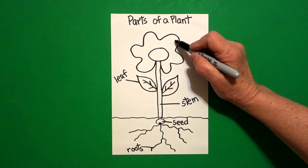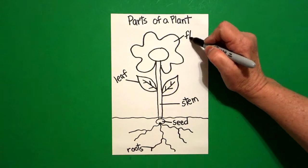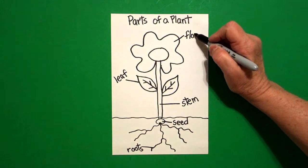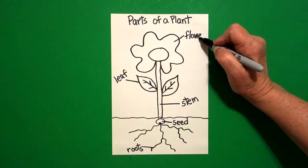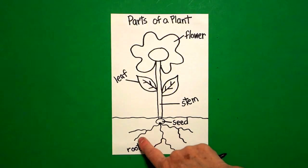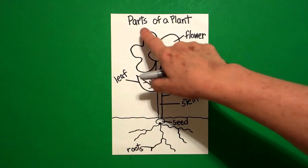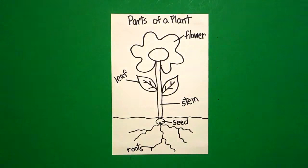And finally, I come up to the very tippy top and I write the word flower, F, L, O, W, E, R. Okay, so we have seed, roots, stem, leaf, flower. All of those are parts of a plant.